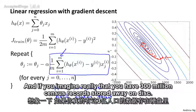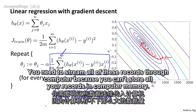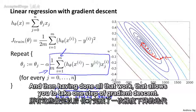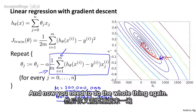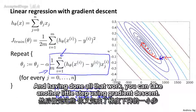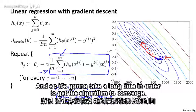If you have 300 million census records stored on disk, the way this algorithm works is you need to read all 300 million records into computer memory to compute this derivative term. You need to stream all of these records through the computer, accumulating the sum to compute the derivative. Having done all that work, that allows you to take one step of gradient descent. Then you need to do the whole thing again — scan through all 300 million records — and this can take a long time for the algorithm to converge.